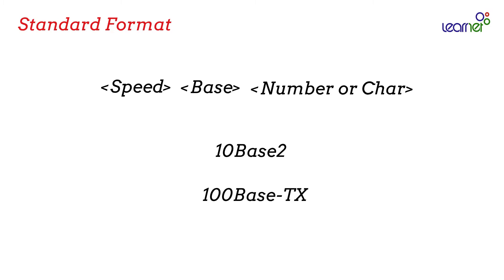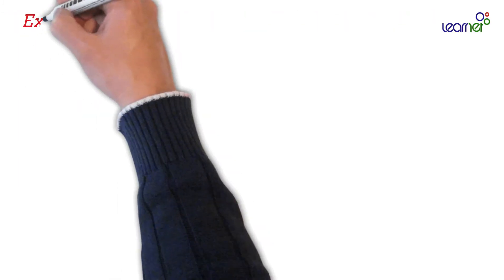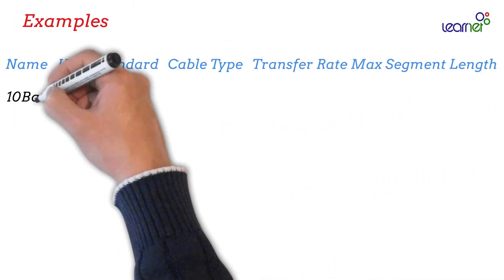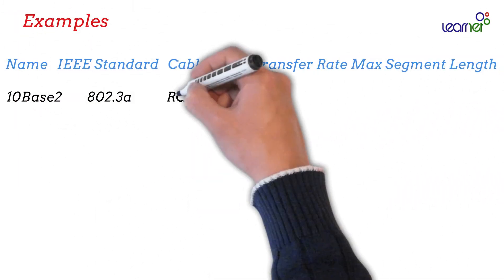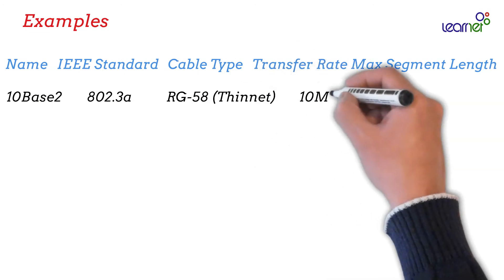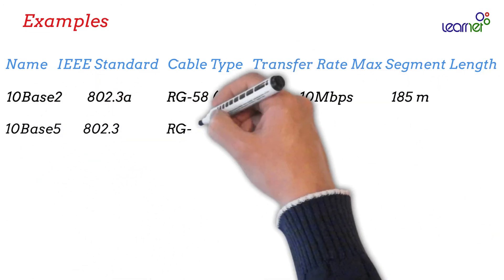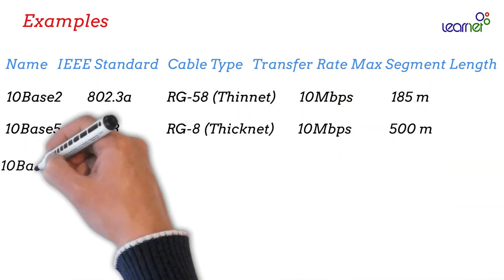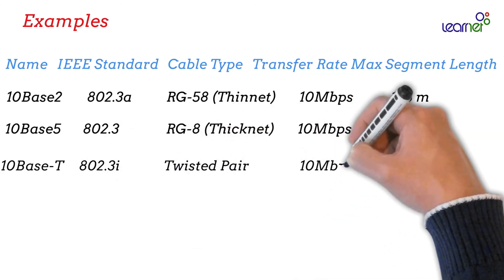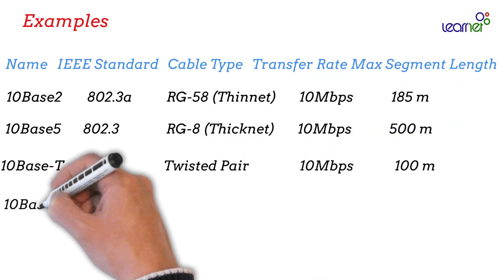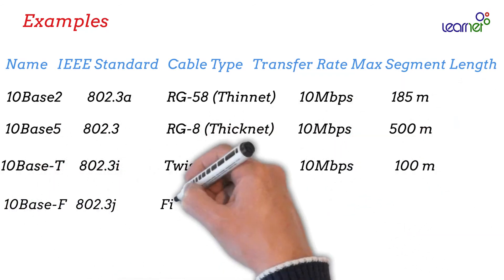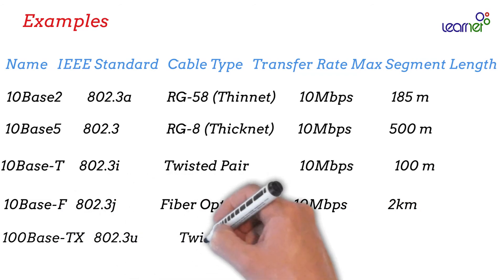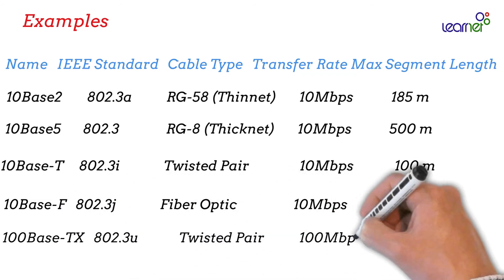These are some famous Ethernet family members. You can see that each standard has a name, standard code, cable type, maximum transfer rate, and segment length. Cisco switches and routers can have different types of Ethernet interfaces or ports, and each of them may support one or a few of these standards.